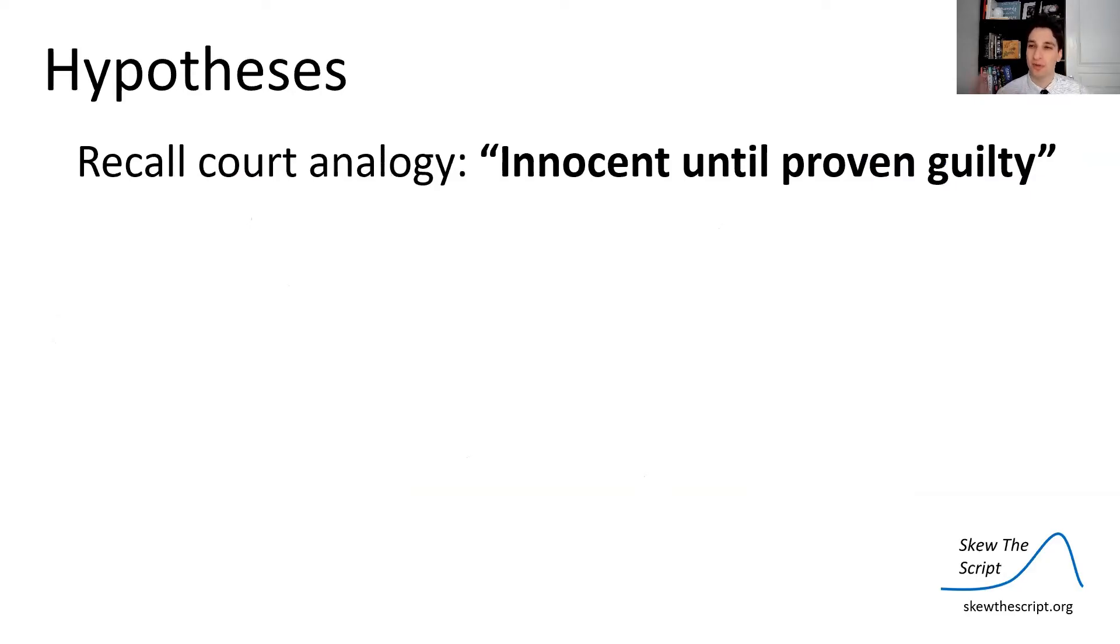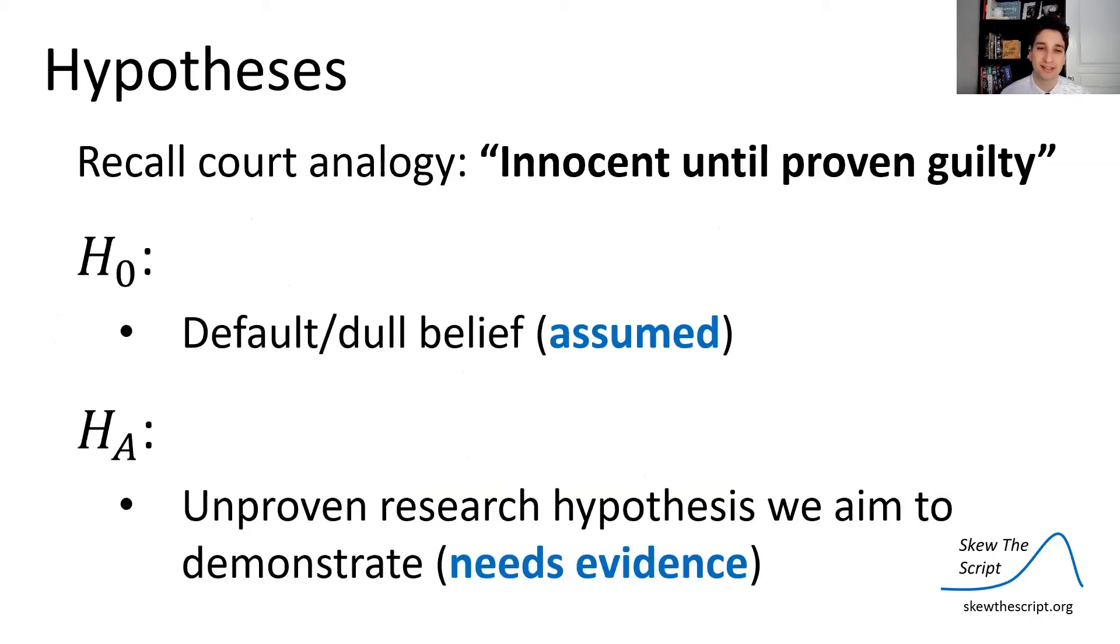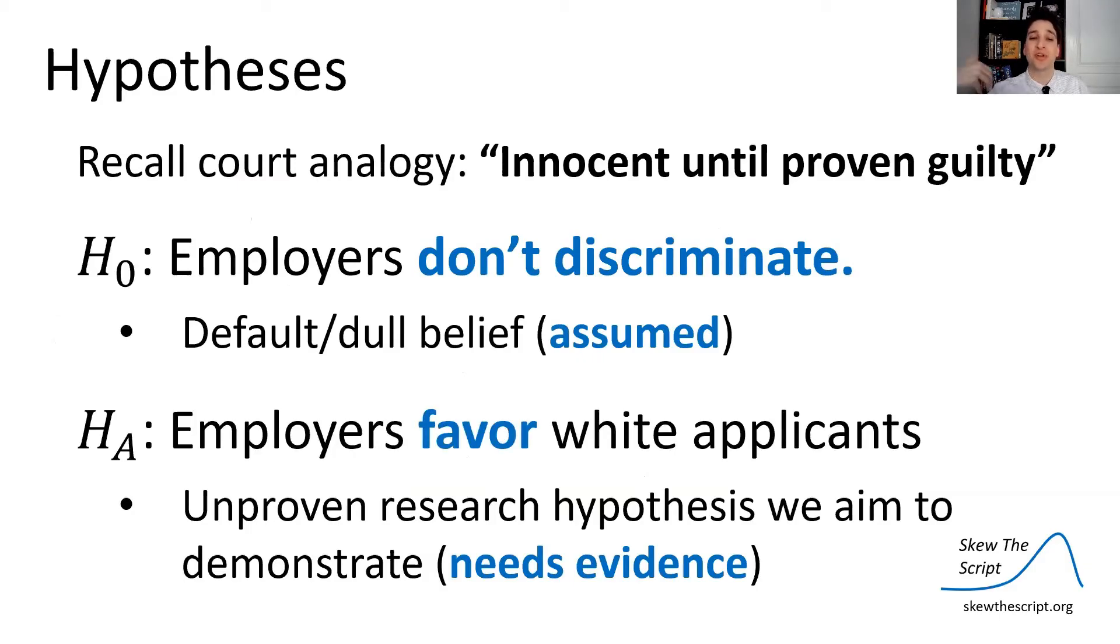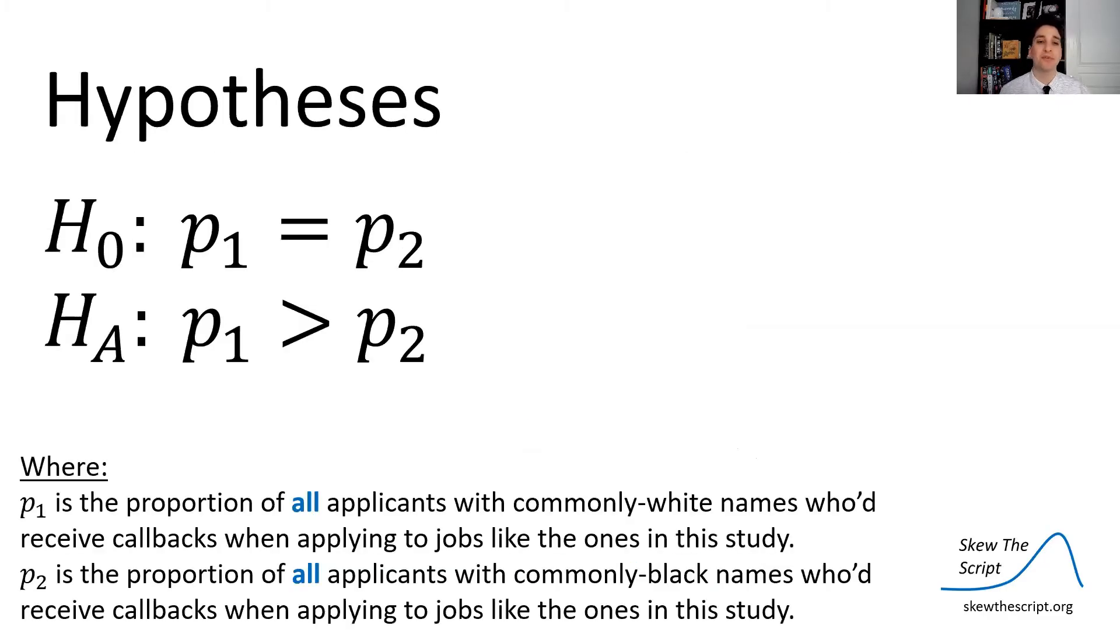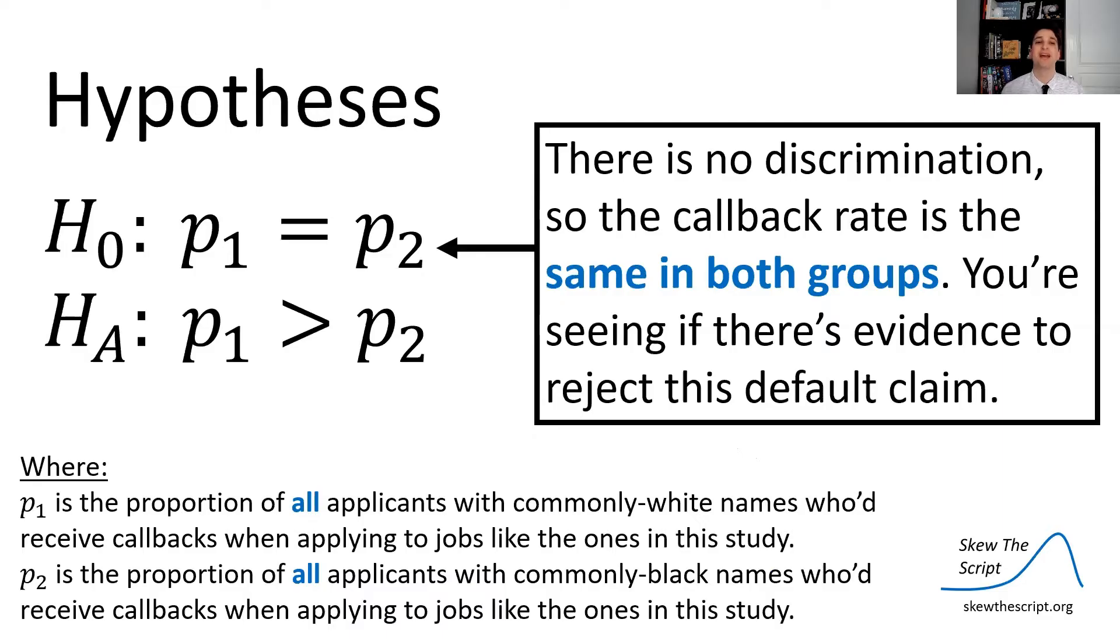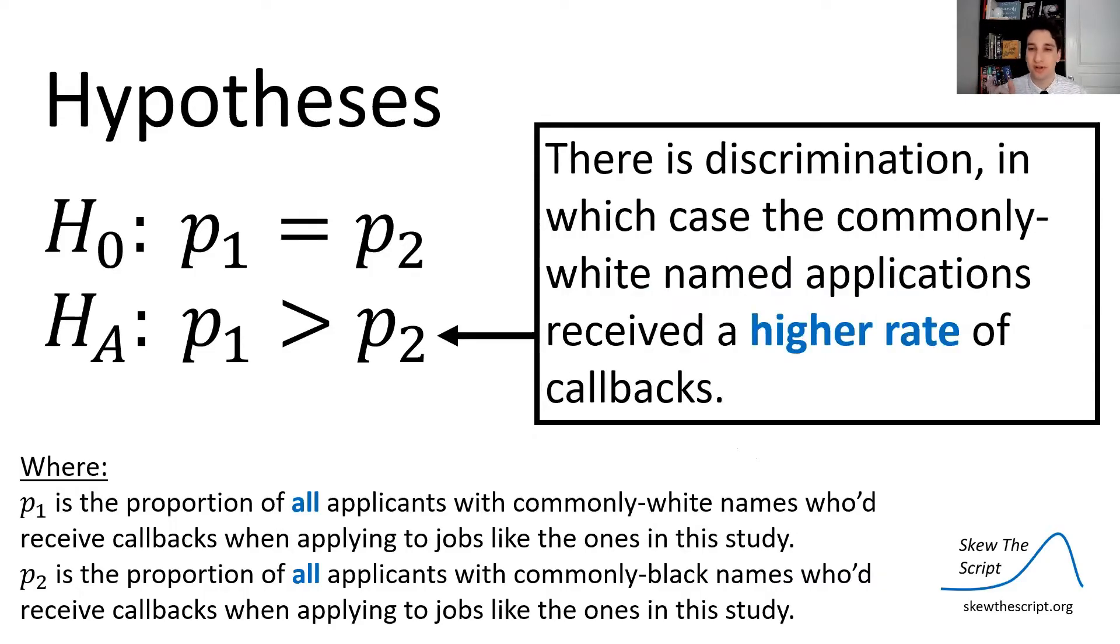So recall when we're setting up these hypotheses, the court analogy we use when we talk about hypothesis tests for the first time. Innocent until proven guilty. The null hypothesis is that innocent assumption. It's the default, dull belief that you really have starting the experiment. Employers don't discriminate. Innocent until potentially we prove guilty in the alternative. Employers favor white applicants. This is the unproven research hypothesis that our data has to have evidence to show. So we can frame these hypotheses numerically like this. The null hypothesis is that there's no discrimination, so therefore the callback rates, the proportion of resumes that got a callback, is the same and both groups are equal. In the alternative where there is discrimination, the white group would receive a higher rate of callbacks.